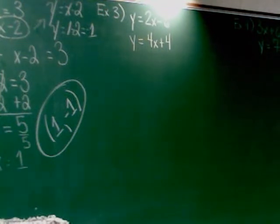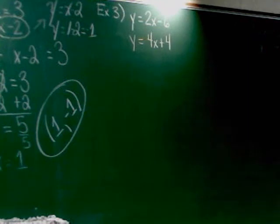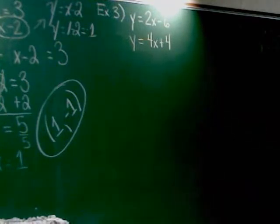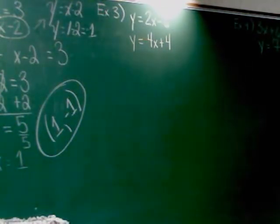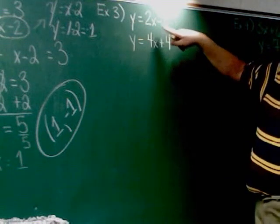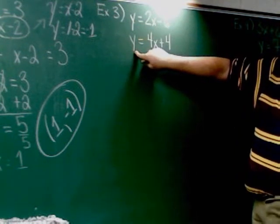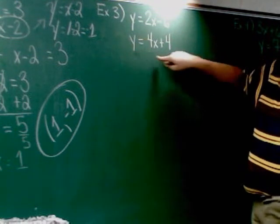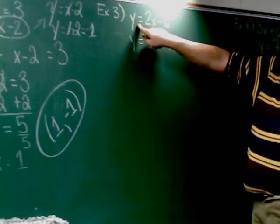Alright. Now, example 3. Example 3 is a little bit different. Got y equals 2x minus 6, y equals 4x plus 4. Okay. Now, in this one, you can choose. That's what's nice about this one. I can take, since y equals 2x minus 6, I can change y here to 2x minus 6. Or, since y equals 4x plus 4, I can change that y to 4x plus 4. Cool.